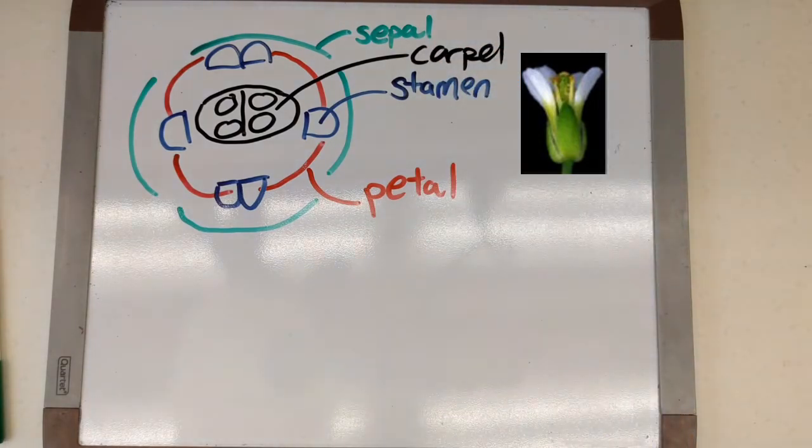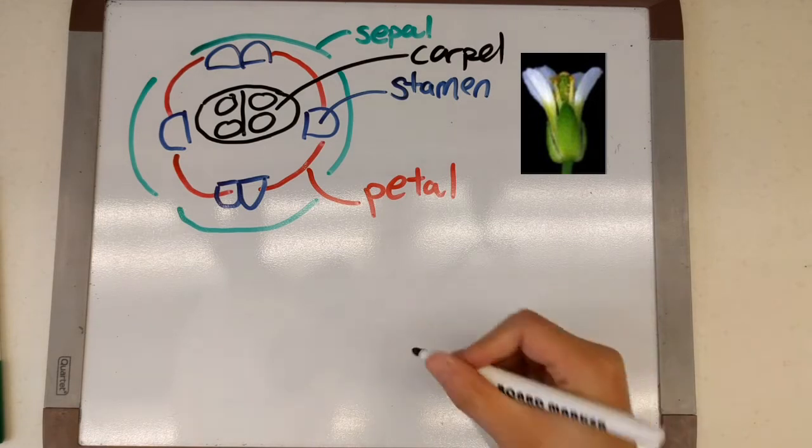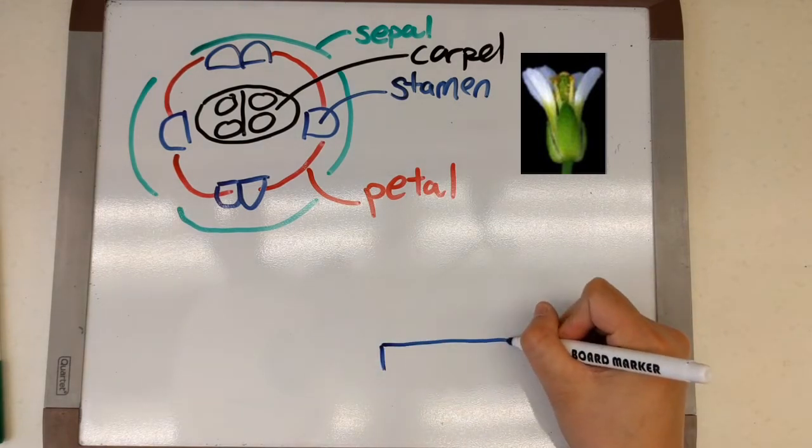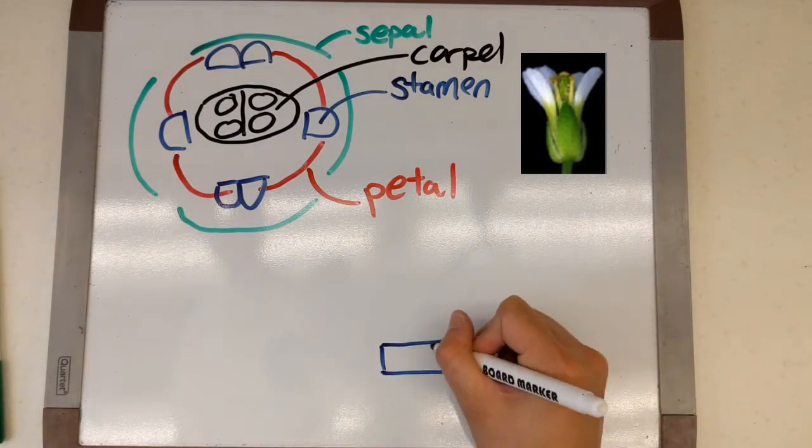Stamens, besides providing pollen for pollinators to carry, can actually be used to self-fertilize their own carpals.